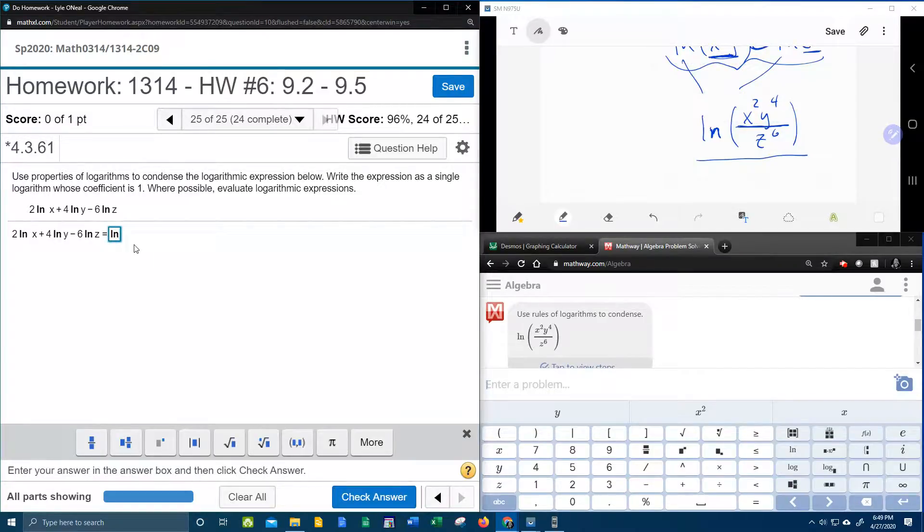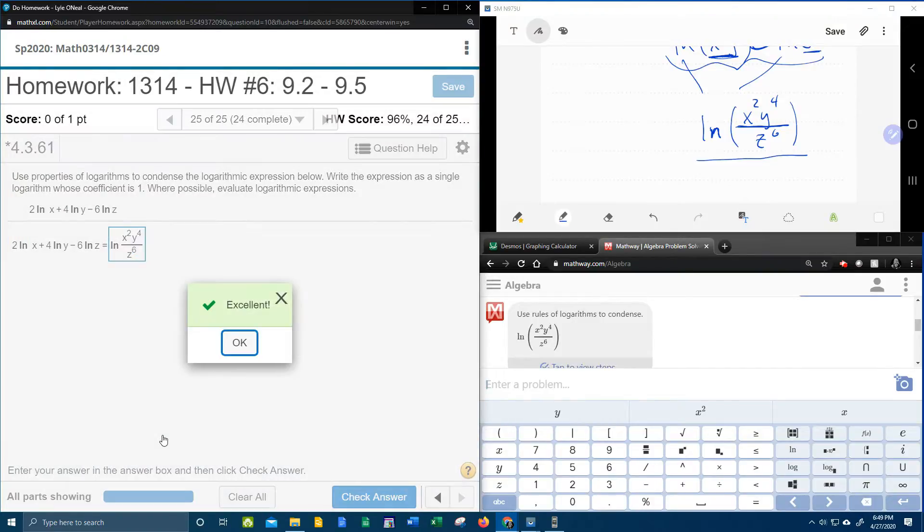ln, fraction, who's on top? x squared, y to the 4th, over, make sure we're in the bottom, z to the 6th. Man, I hope that was helpful. If you have any questions or comments, feel free to put them in the comment section below, or you can text me. Thanks for watching.